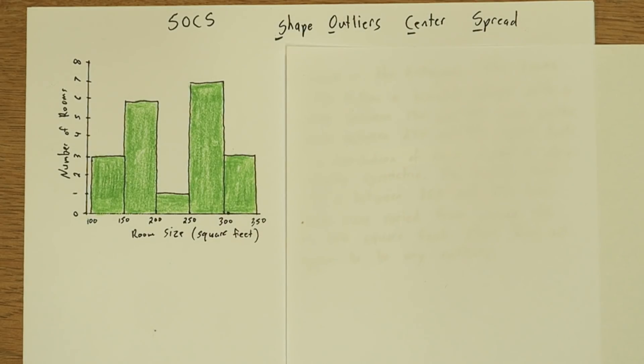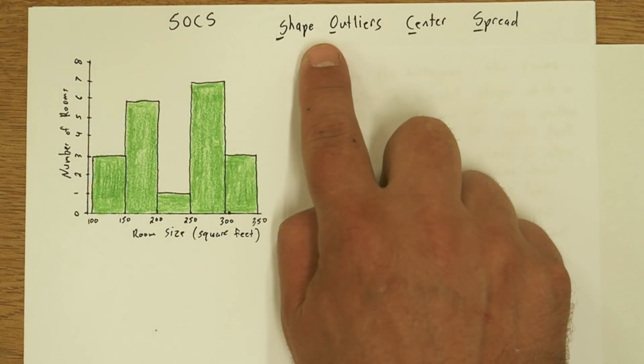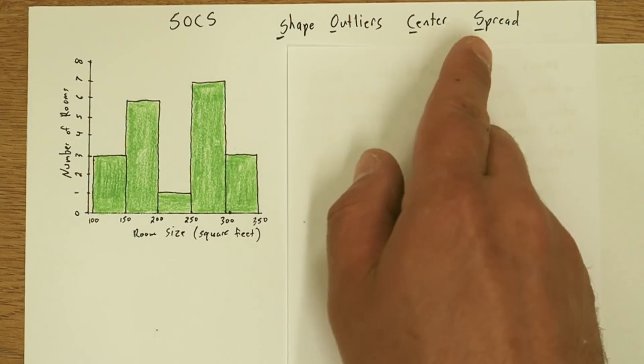Alright, on question one, they ask us to describe the distribution of square footages of rooms. So when you describe a distribution, don't forget your SOCKS. SOCKS is an acronym that stands for Shape, Outliers, Center, and Spread.